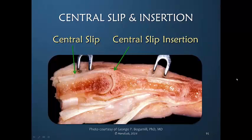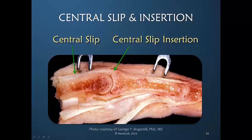Here is a lateral view of the PIP joint. We see the proximal phalanx, the articulation, the middle phalanx, a very clear long volar plate with the swan tail, a pulley for the flexor tendon, and most of all we see the central slip and the central slip insertion just distal to the PIP joint. The mechanical advantage of this insertion so close to the axis of the joint is not very great, so the central slip insertion alone does not have a lot of power for PIP joint extension.